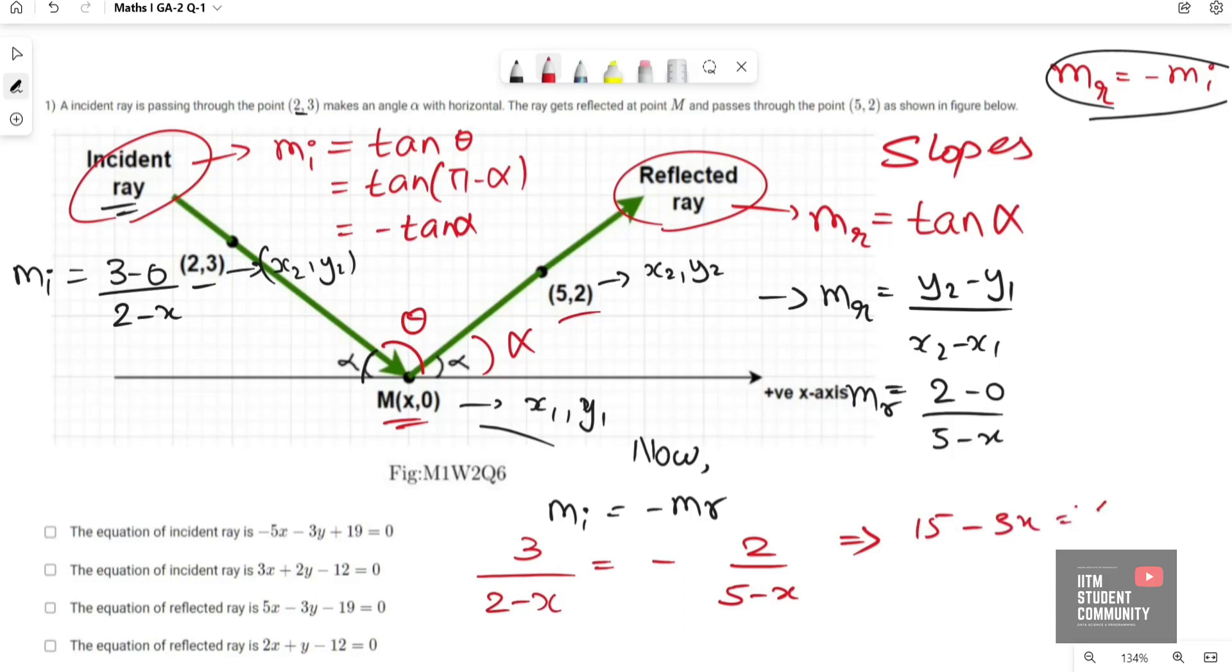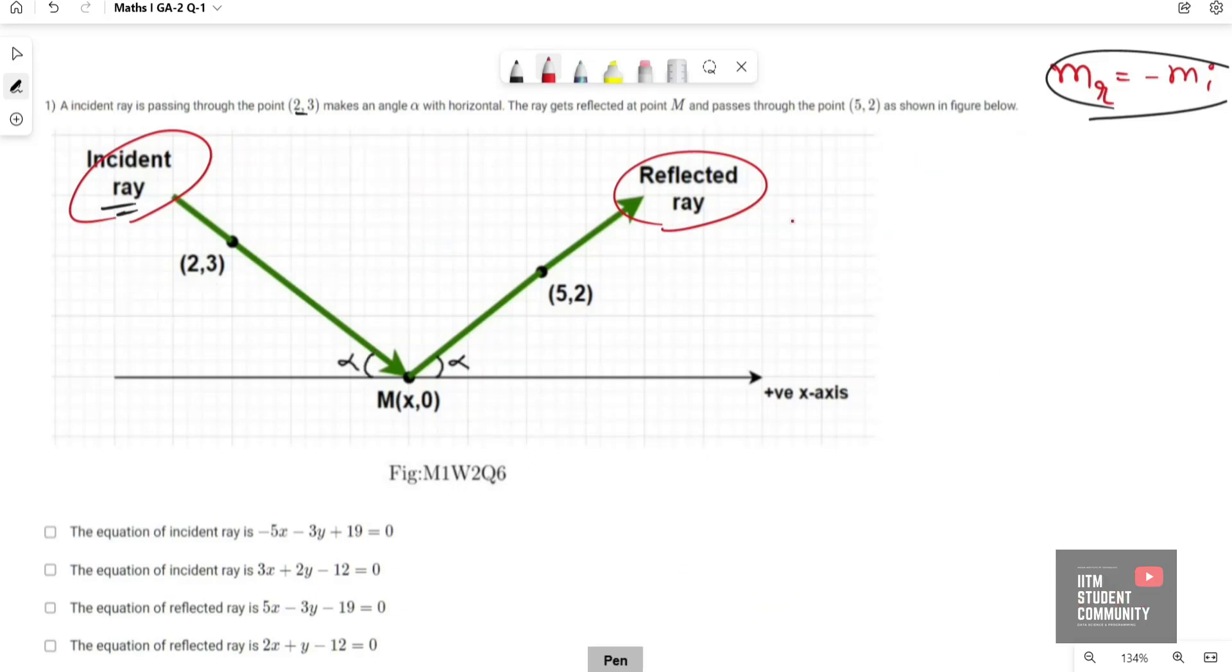Which on solving gives 15 minus 3x equals minus 4 plus 2x. Hence 5x is equal to 19, so value of x is equal to 19/5.